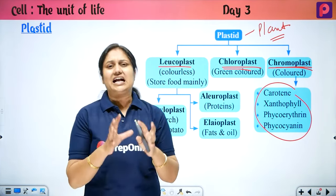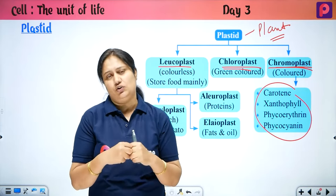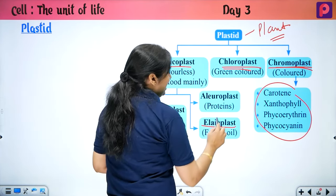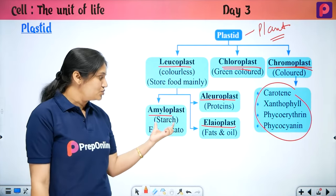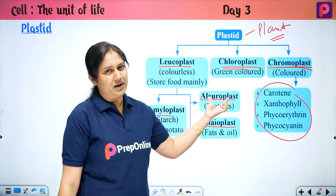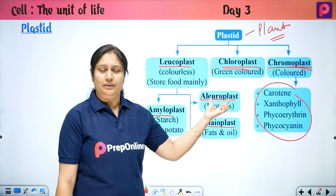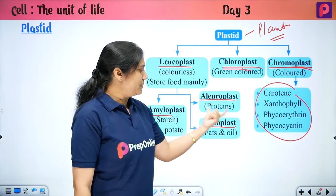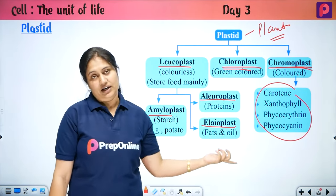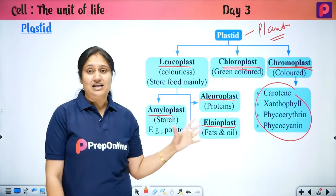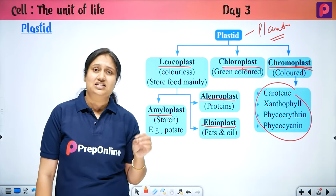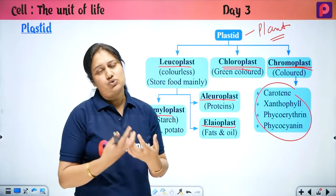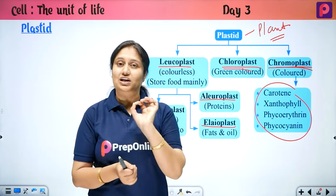Leucoplast is colorless, and its main function is storage. There are three types based on what food is stored: Amyloplast stores starch, Elioplast stores oils/fats, and Aleuroplast stores protein (related to the aleurone layer in monocots). When there is a young fruit with no color yet, these leucoplasts store food. Later, they may convert to chromoplasts.